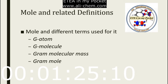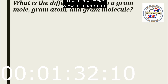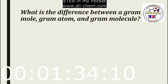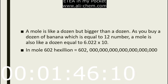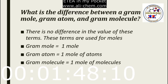Now, mole and related definitions — there are a lot of definitions of mole, including gram atom, gram molecule, gram molecular mass, and gram mole. The question is: what is the difference between gram mole, gram atom, and gram molecule? There is no difference in value between these terms, but they are used for different kinds of particles. Gram mole is for one mole of anything, gram atom is for one mole of atoms in a compound or substance, and gram molecule is for one mole of molecules.